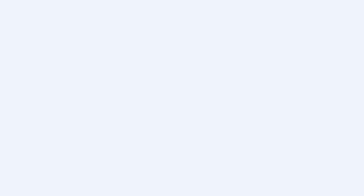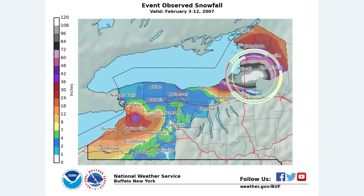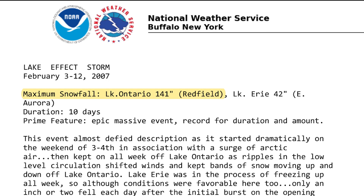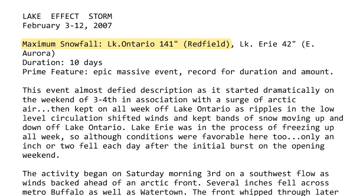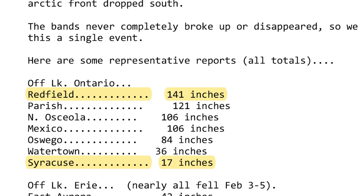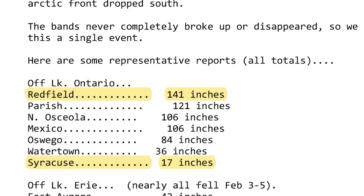One of the largest lake effect snow events in New York occurred in February of 2007 in the Tug Hill area, where 141 inches of snow fell over a multi-day period. By comparison, the Syracuse area only received 17 inches from the same event.